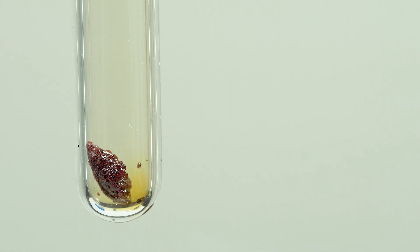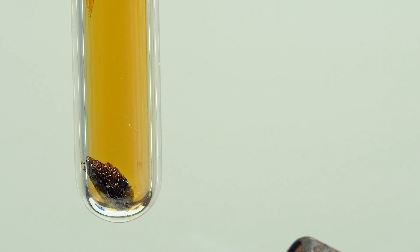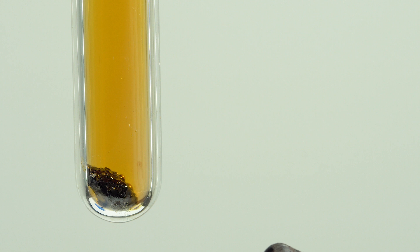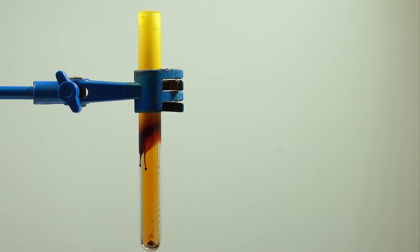At temperature above 60 degrees Celsius, iodine trichloride decomposes into chlorine and iodine monochloride, that's a red-brown liquid. Now you can observe iodine monochloride flowing to the bottom of the tube.